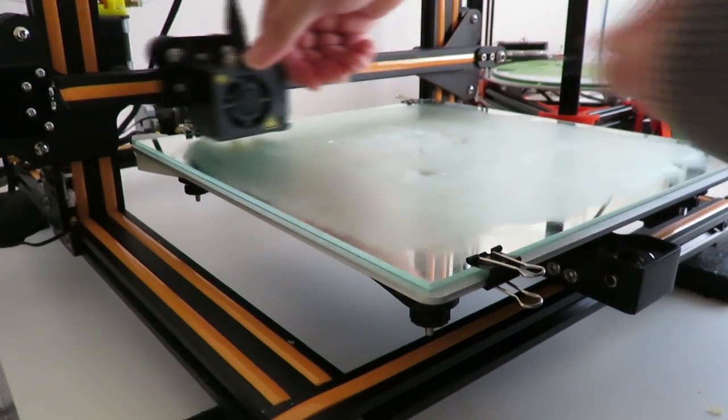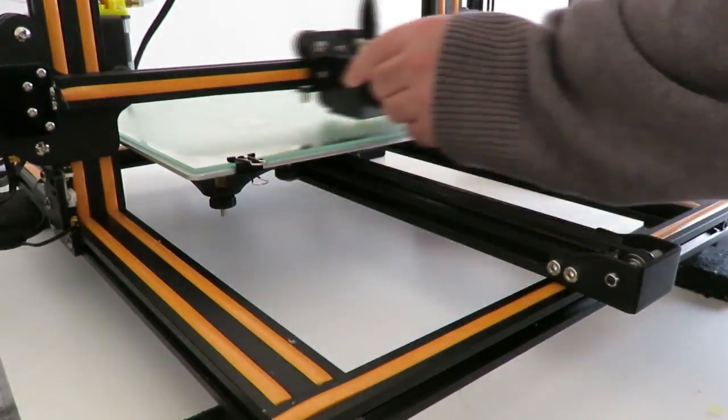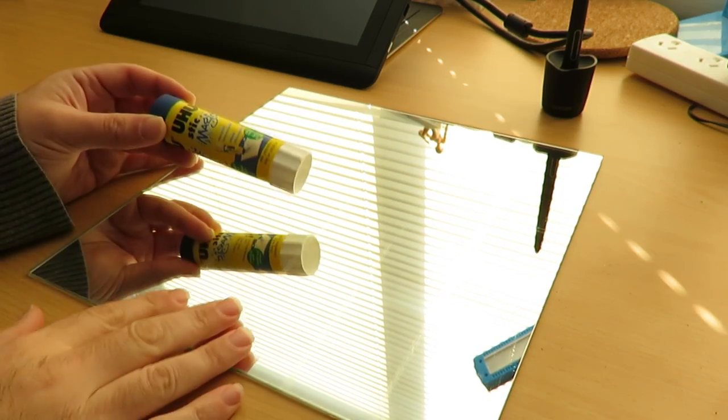I do this whole process twice, that means each corner is leveled two times in total. Then we're going to prepare our print surface.